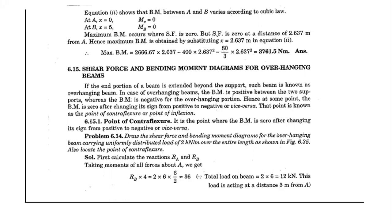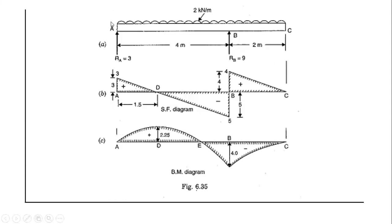This is our overhanging beam example for sake of solution. You can have reaction values that you can calculate yourself. The overhanging beam has a train portion which is 5 meters in direction.